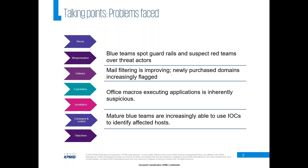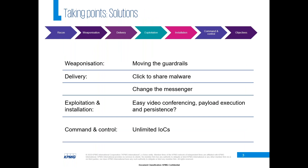Mail filtering is improving, and things like newly purchased domains are increasingly getting flagged by default. So we're looking at methods of addressing that — being able to still get your mail into inboxes. We'll also look at how we can make office macros less suspicious, exploitation of Teams (which I know a few people have joined to hear about), and finally, how we can play with IOCs to make it harder to identify other infected hosts once we're inside the network.